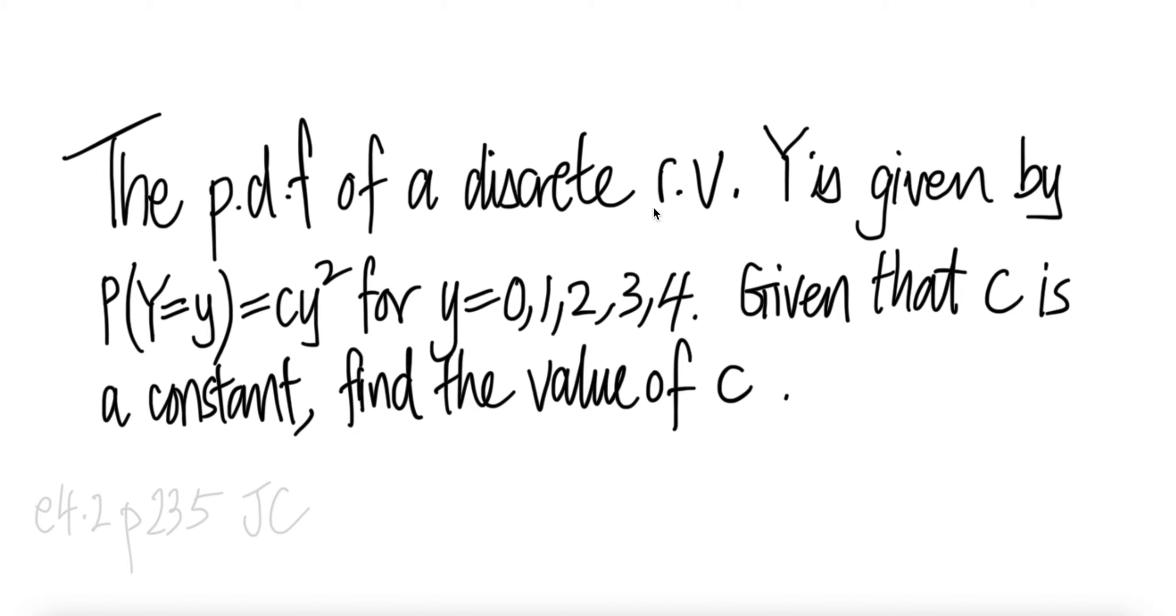The PDF of a discrete random variable Y is given by P(Y=y) = cy² for y equals 0, 1, 2, 3, 4. Given that c is a constant, find the value of c.